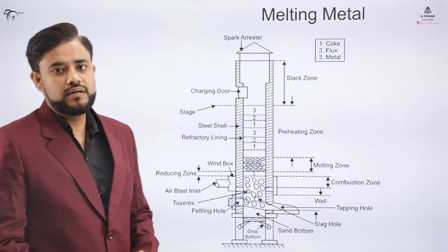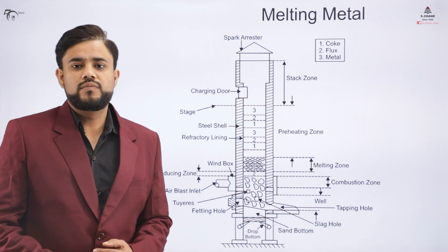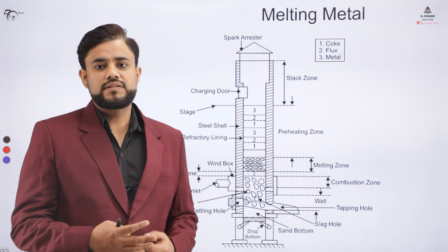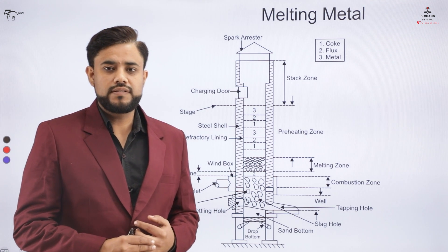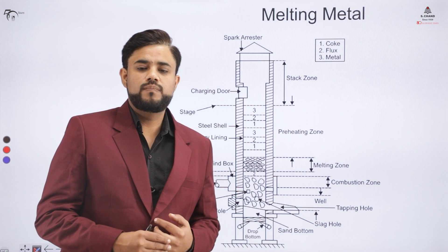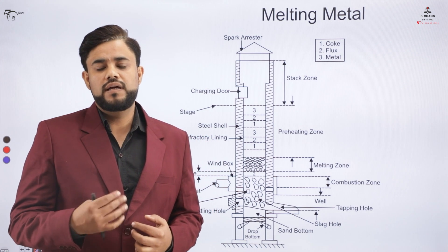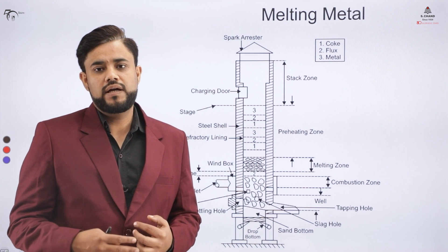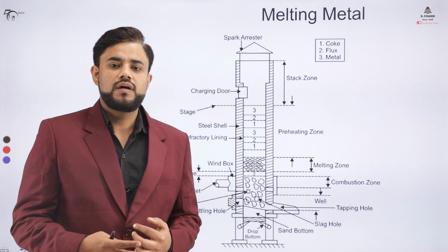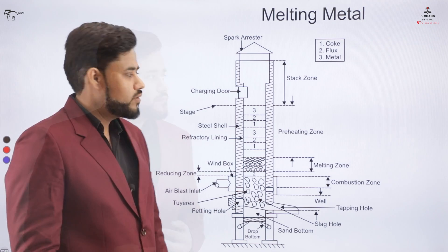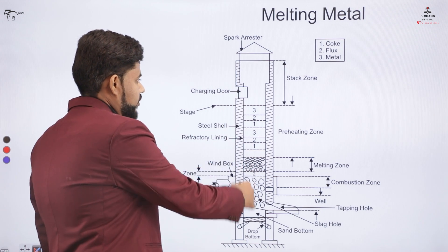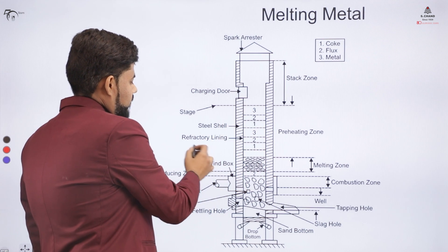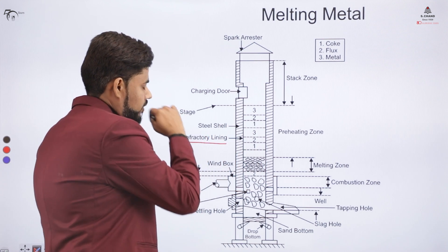The second furnace we will be learning about is the cupola furnace. The diagram on screen shows a cupola furnace, where material is placed layer by layer. We have a layer of coke, a layer of metal, and additionally a layer of flux. The furnace has a shell that is covered with a refractory lining.